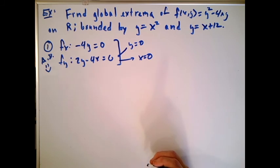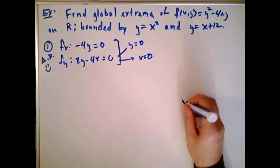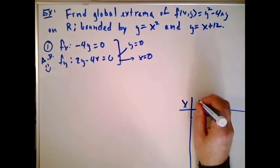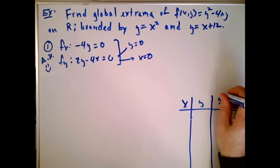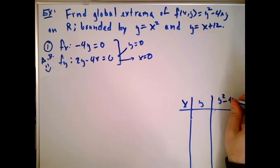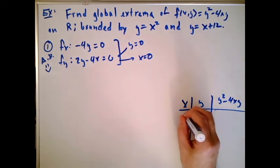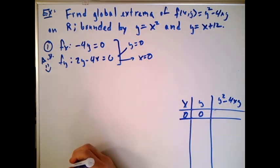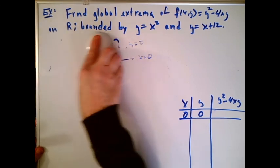Now I'm going to start our table. The table needs x and y coordinates and the function value. The first entries — just like in Calc 1 — are the critical points. That's the first part. The second part, which is usually the long part, is dealing with the boundary.